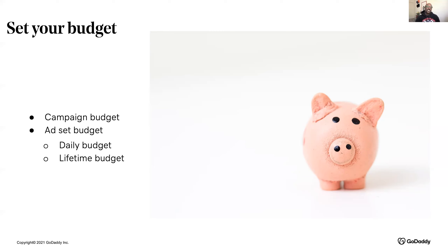You can set an overall budget for your campaign with campaign budget optimization, or set individual budgets for your ad sets. Campaign budgets let you set one overarching budget, which simplifies your campaign setup and reduces the number of budgets you have to manage manually. Ad set budgets let you set individual budgets for each ad set campaign — useful if you want more control over delivery or have mixed optimization goals, like awareness, conversions, or app installs.